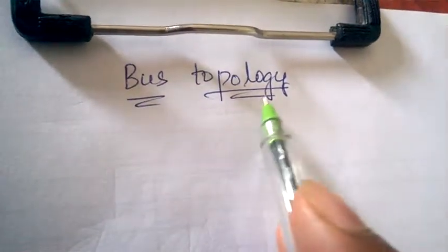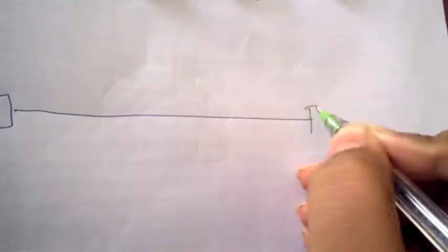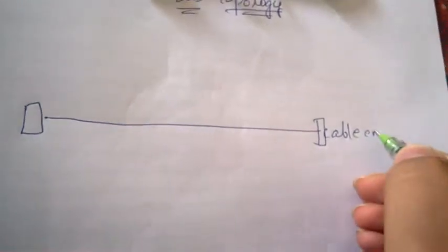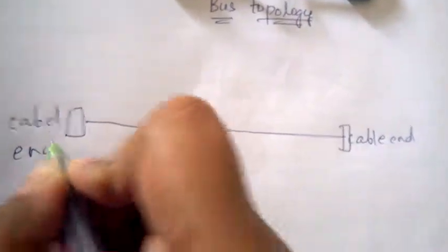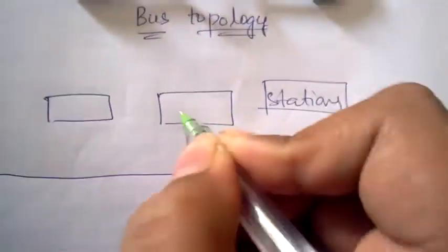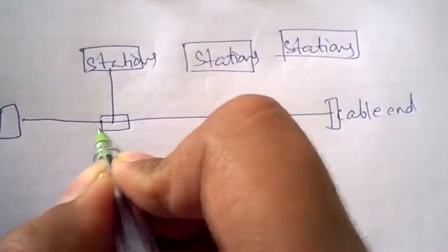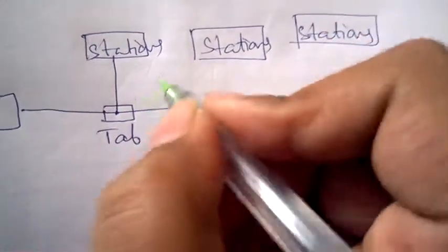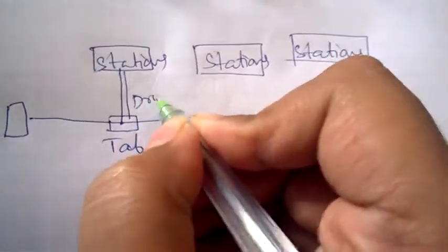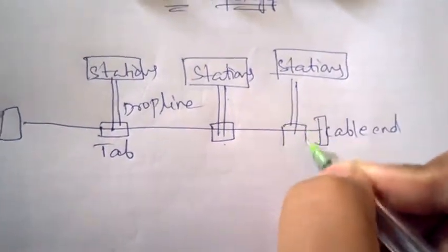Before discussing bus topology, let us check out the architecture of bus topology. This is the cable end and this is another cable end. Here there will be devices or stations, and these stations will be connected to the cable end. The connection point is called the tap, and this is called the drop line. This is common to every station.